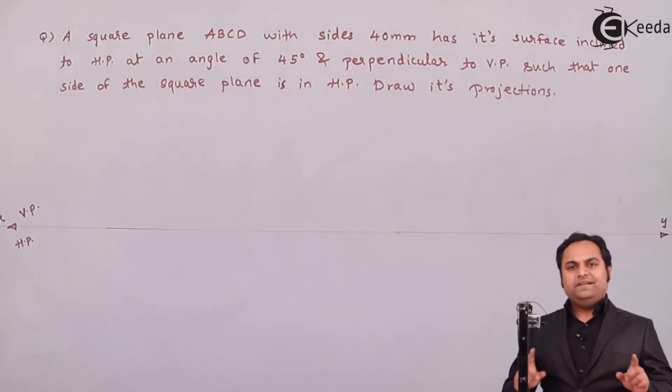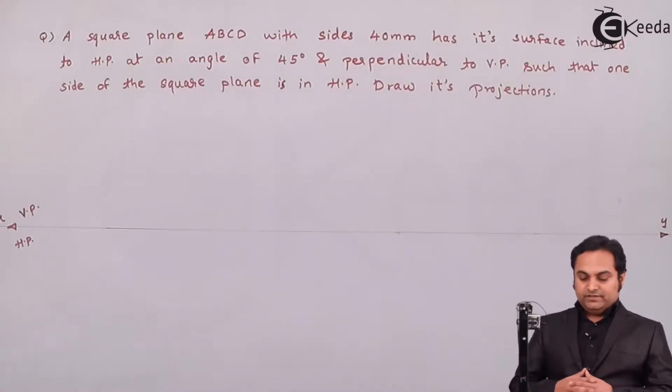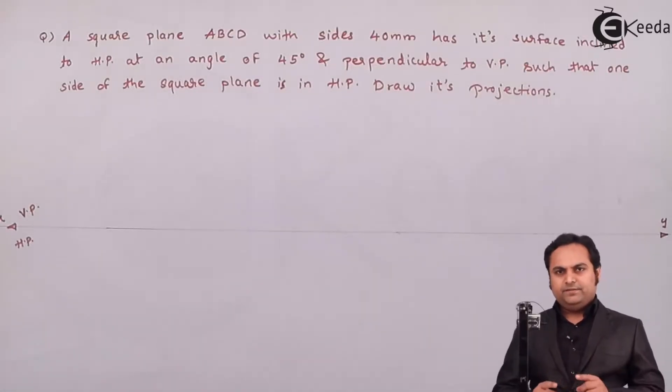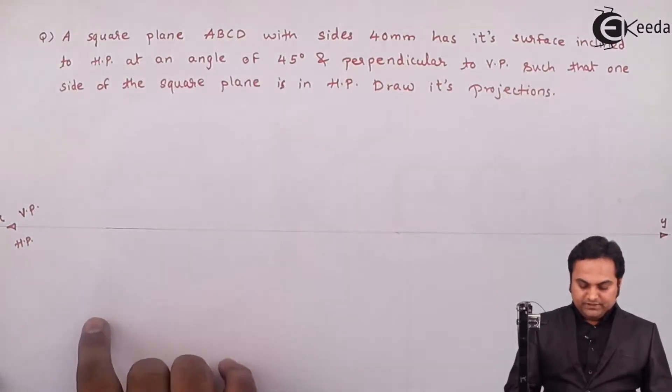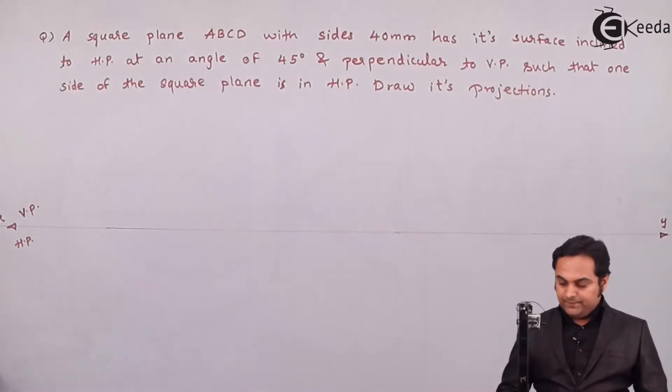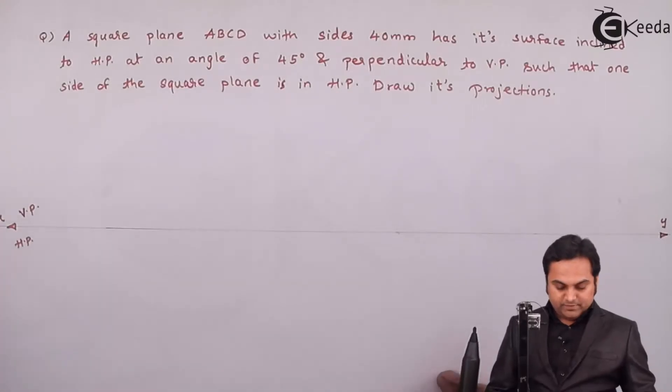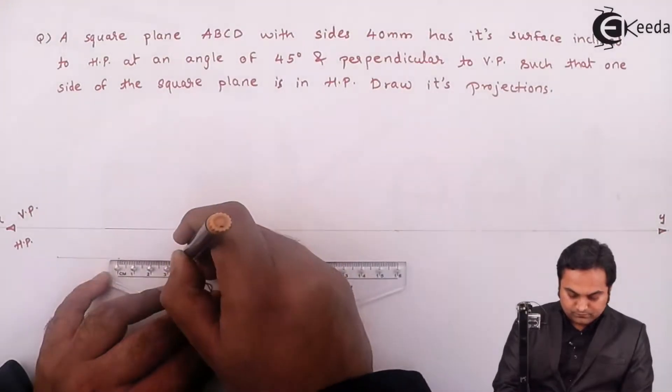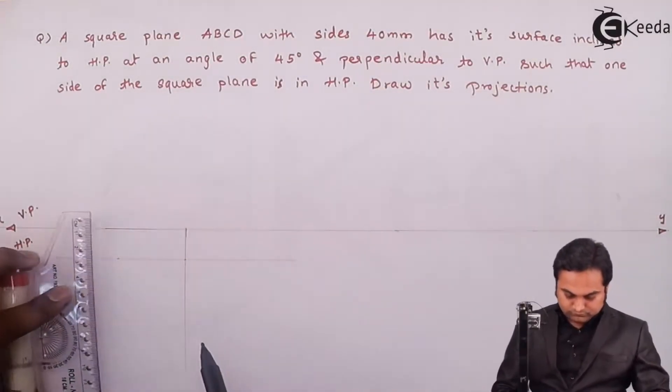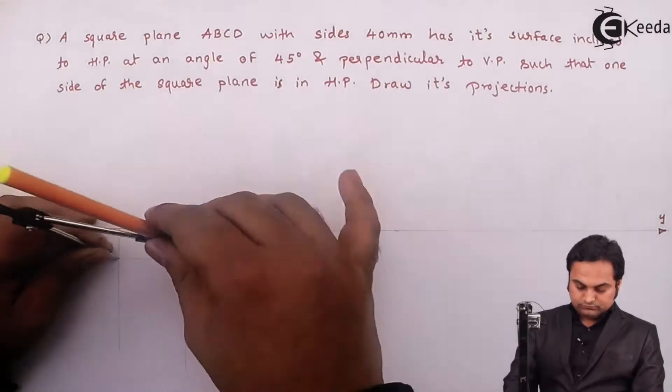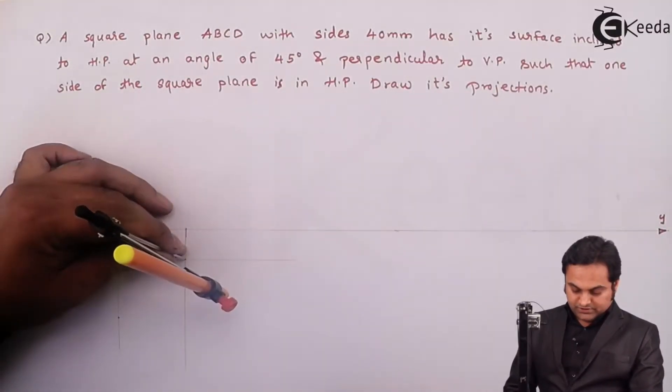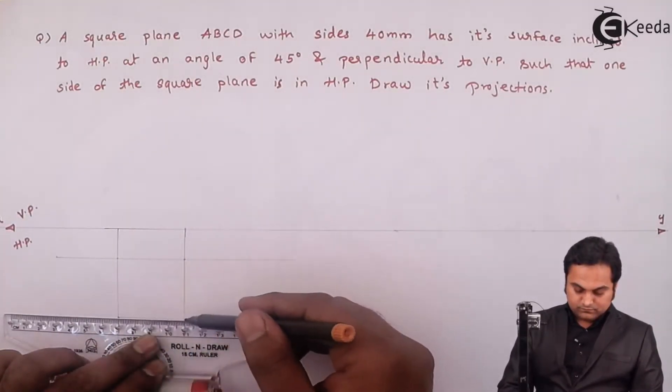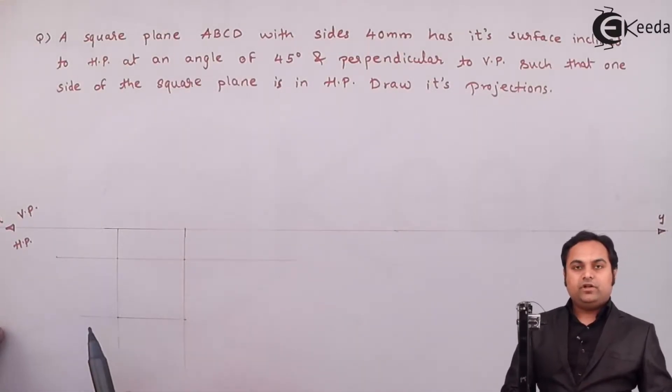If one of the sides is in HP, it means the complete square plane is in HP. When we are looking from top, we are going to see the square plane of 40mm side. So in the top view, I am going to draw in HP a square plane of 40mm side, measuring the same distance 40mm and marking over here. So in this way the square plane will be looking from top. This is the top view.